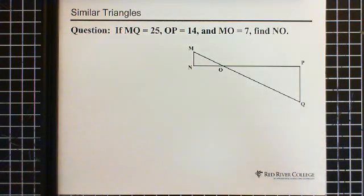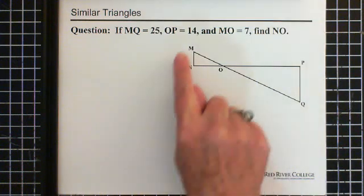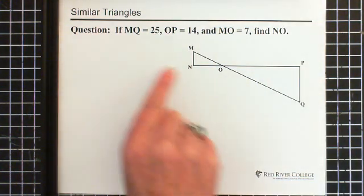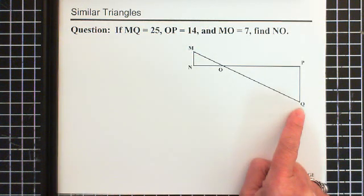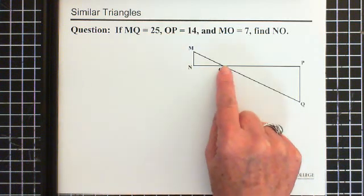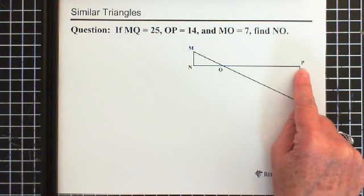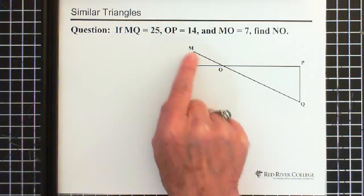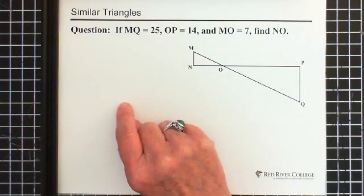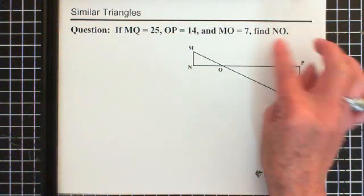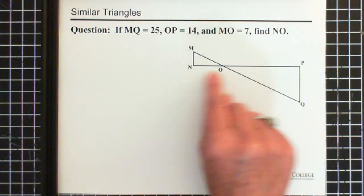So here's a question. We have this shape here. We're told that MQ, so the distance from M to Q is 25. We're told the distance of OP from O to P is 14. And we're told that the distance from M to O is 7. And what you need to find is the distance NO right here.